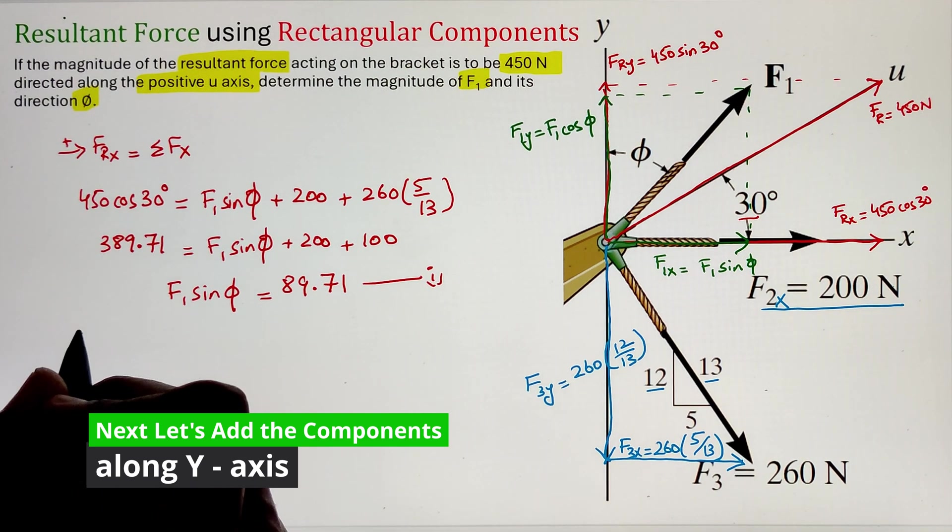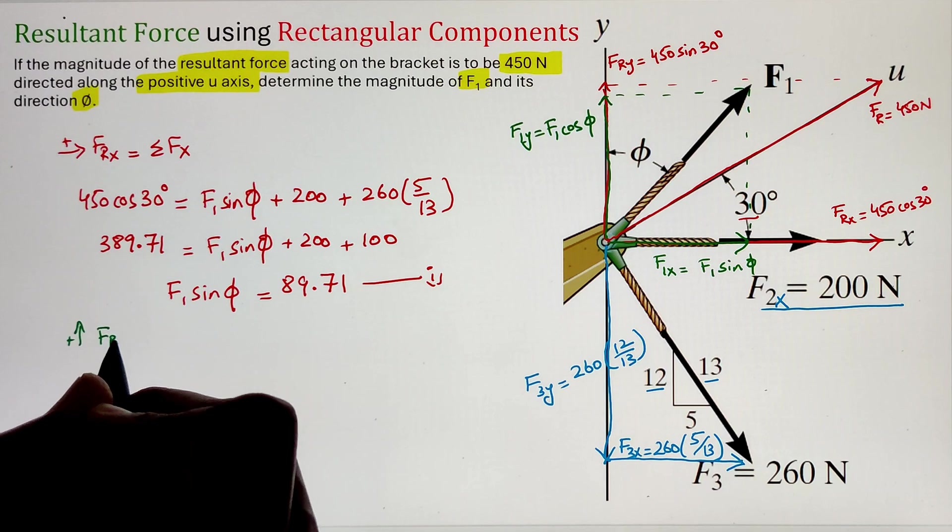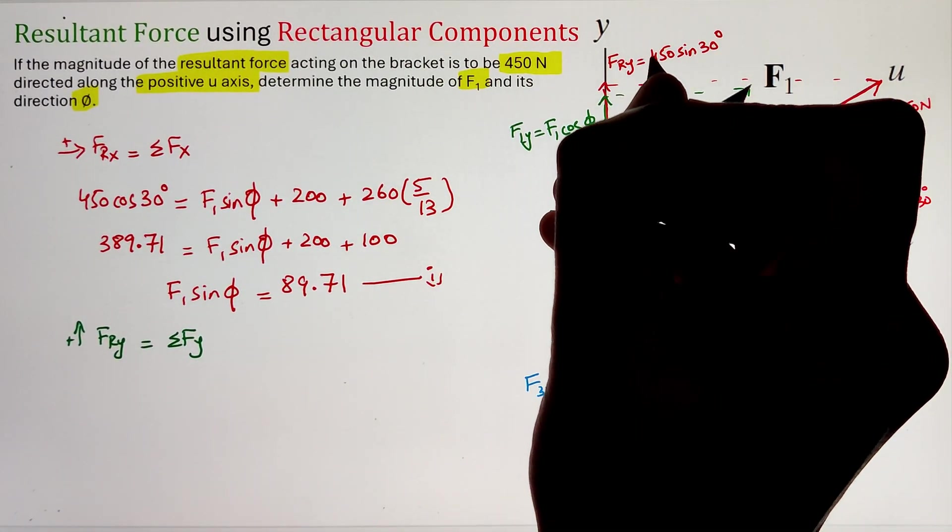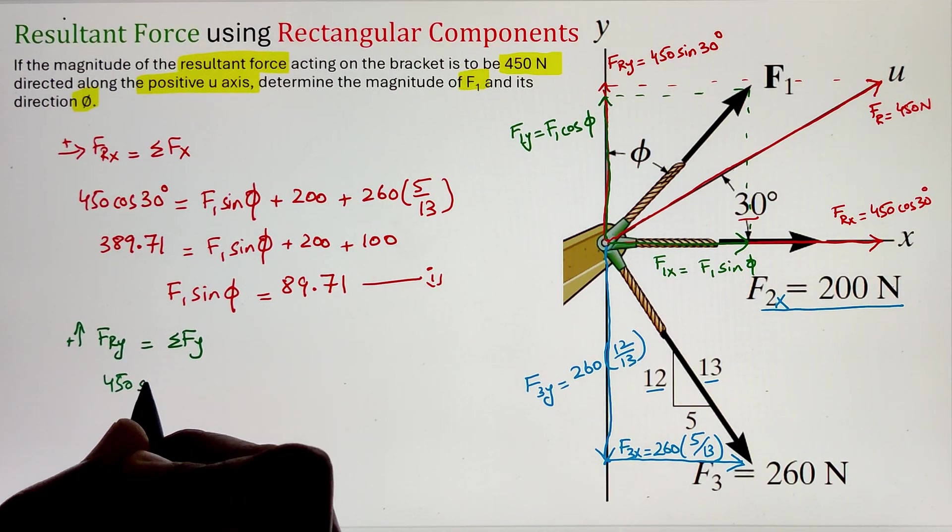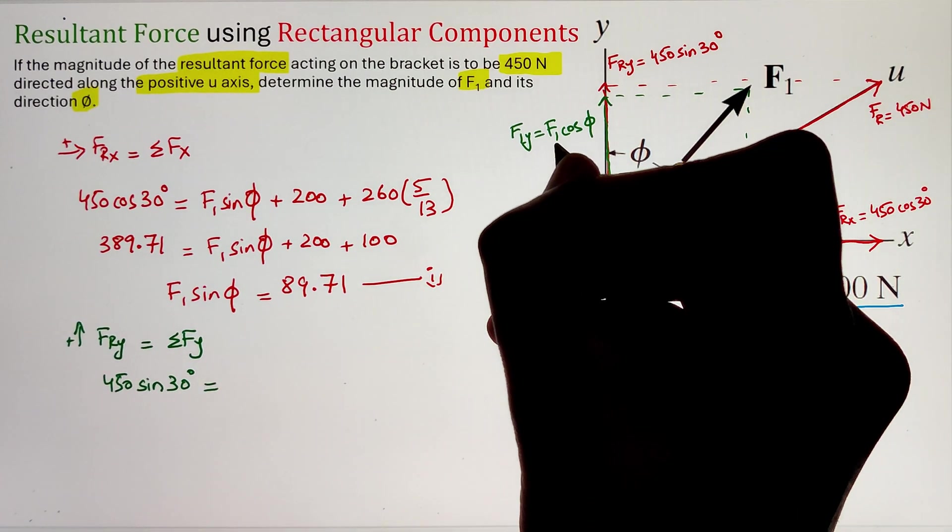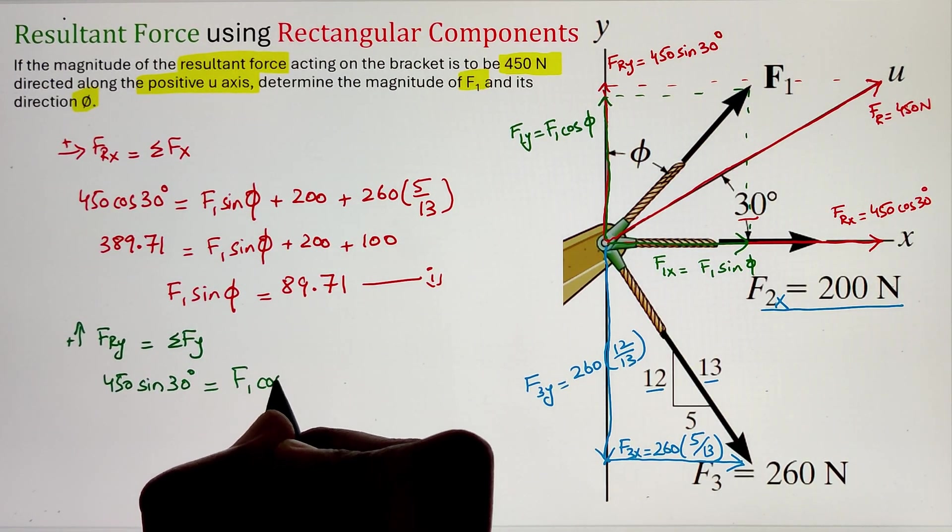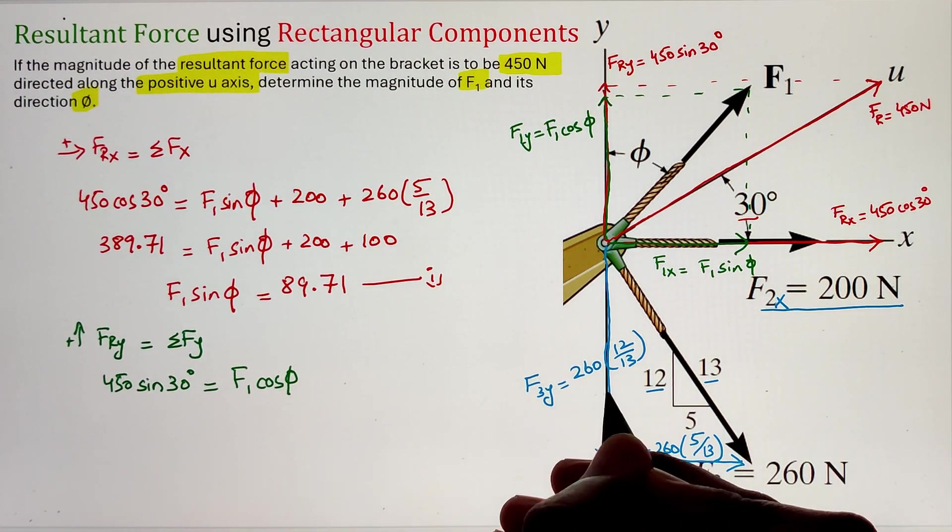Next, we can repeat the same process but this time along the y-direction. Here we are taking the sign convention upward as positive. So our FRy equals 450 sine 30. It can be equated to the sum of all the y-components of forces F1, F2, and F3. Here, force F2 doesn't have the y-component, so we have only two of those.